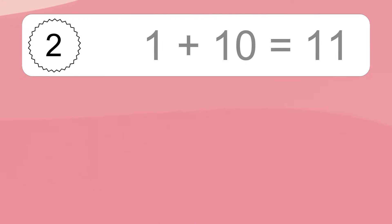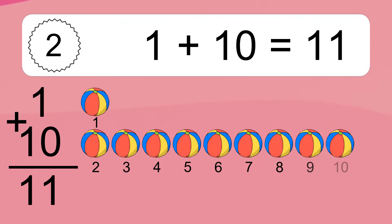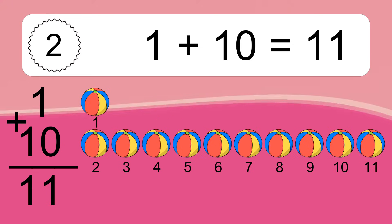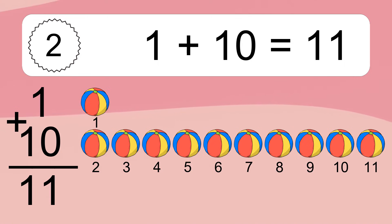1 plus 10 equals what? 1 plus 10 equals 11. Let's count it: 1, 2, 3, 4, 5, 6, 7, 8, 9, 10, 11.